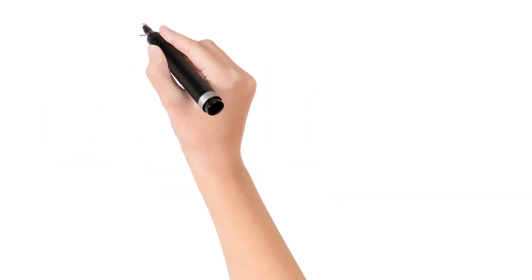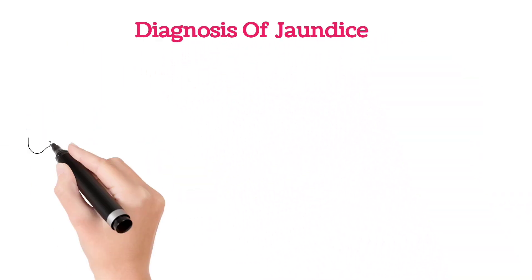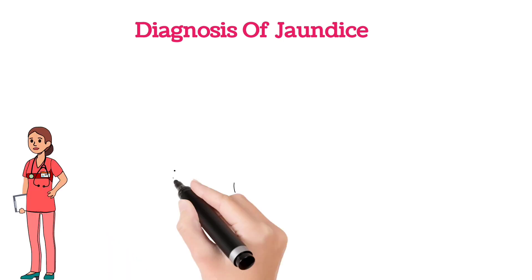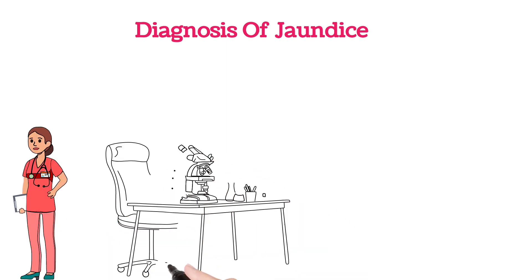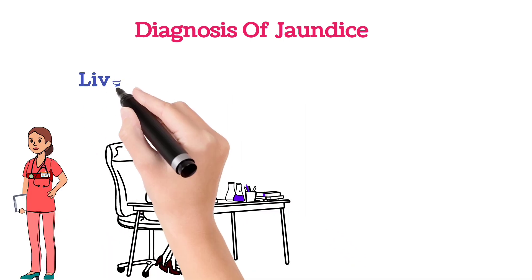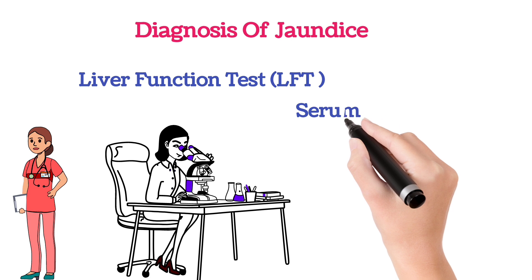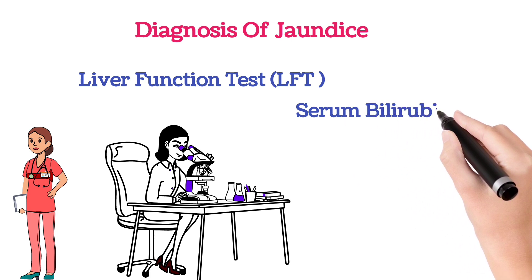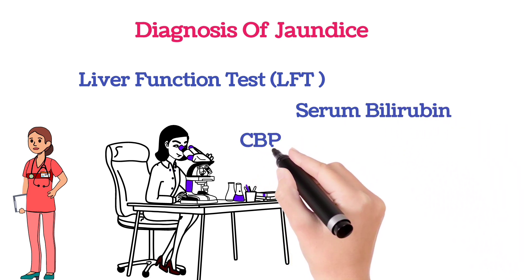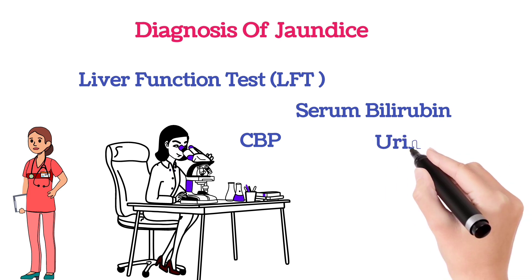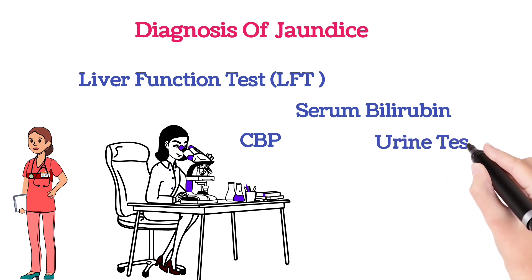Coming to the diagnosis, jaundice can be diagnosed by proper clinical examination and history taking. Certain tests are required like liver function test, serum bilirubin test, CBP — complete blood picture — where we can analyze the RBC, WBC that is white blood cells, platelets, etc.